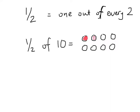So for every column of two circles I'm going to colour in one of them — that's one out of every two, repeated across each column. There are ten circles, so I need to make sure I start with ten. And there you can see: one out of every two equals a half, and a half of ten equals five.